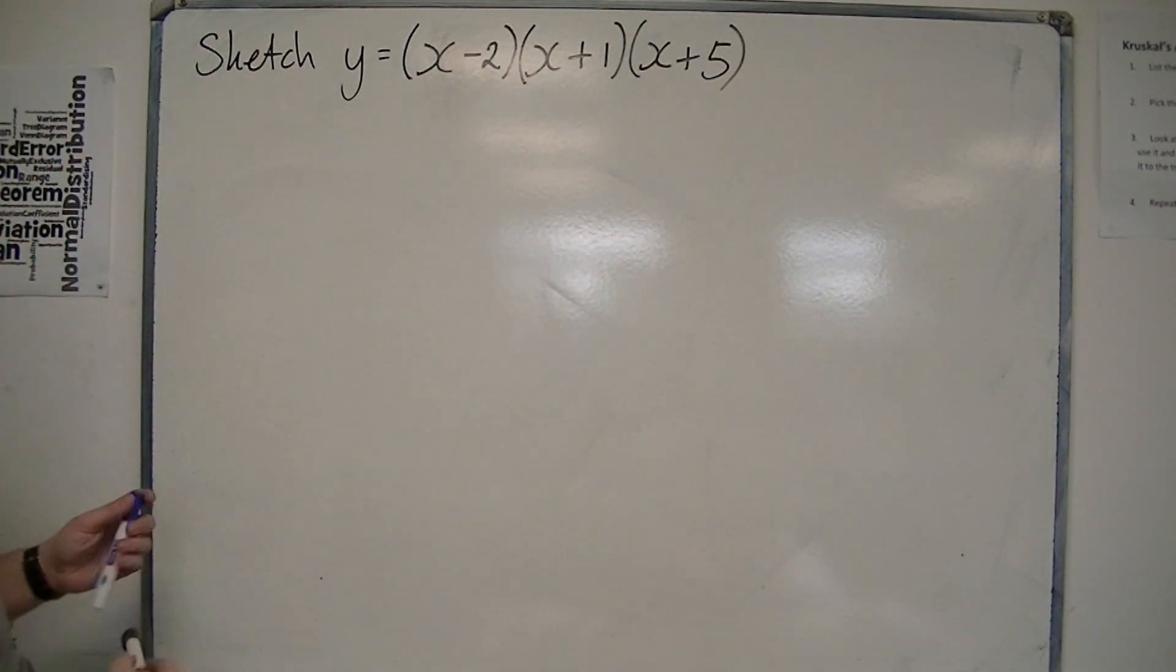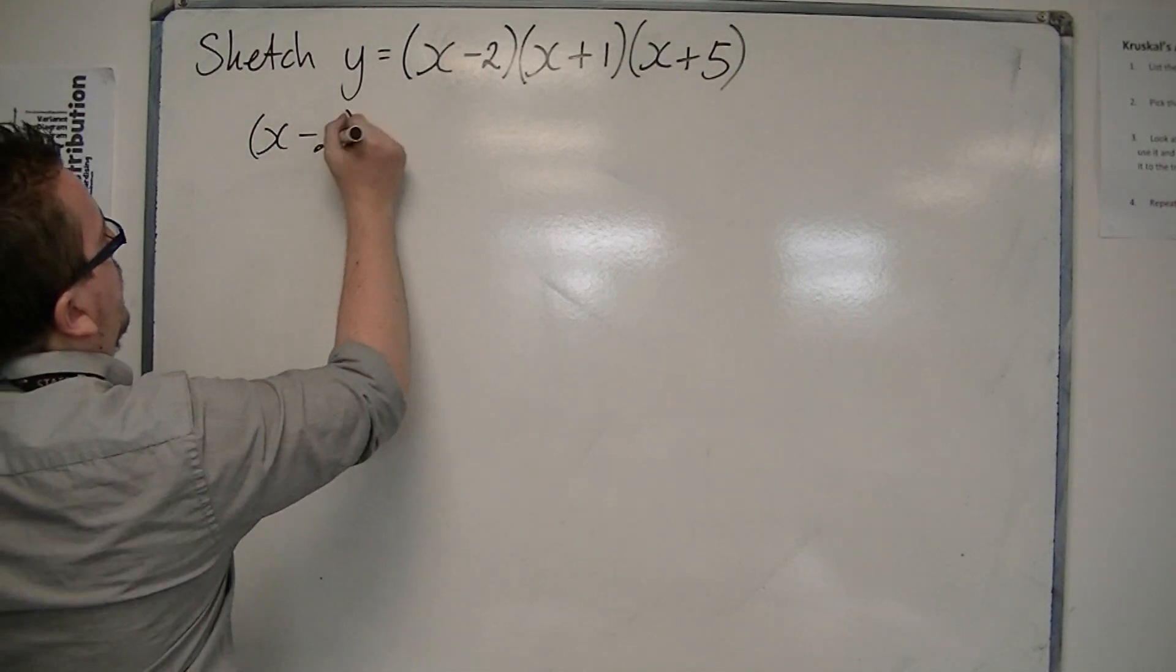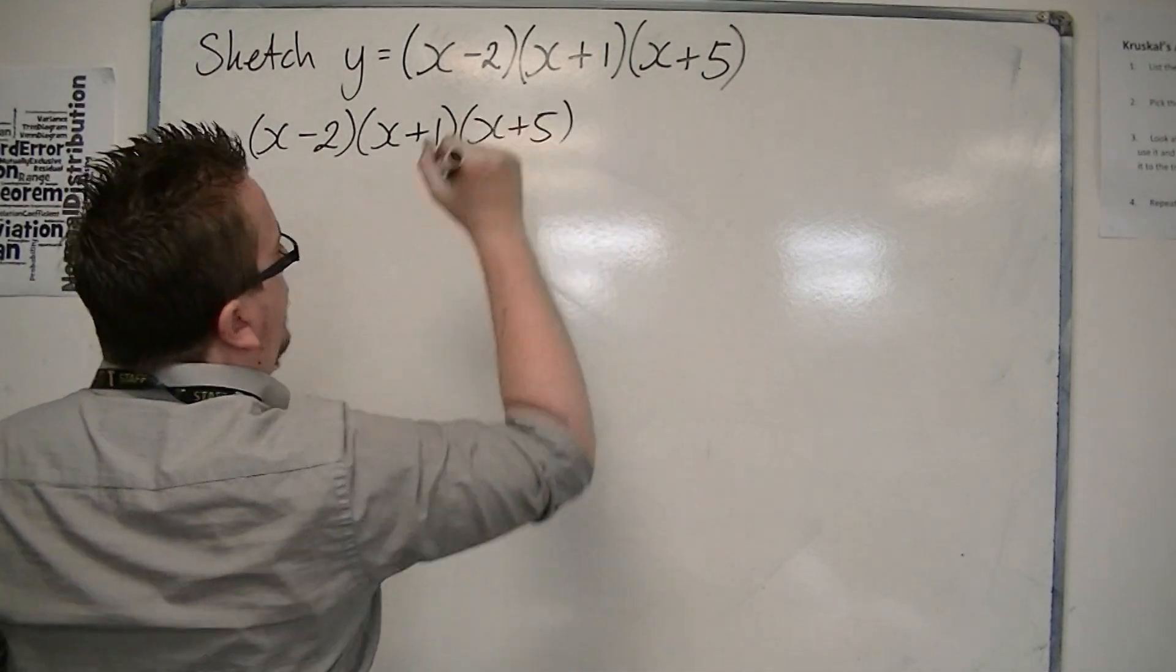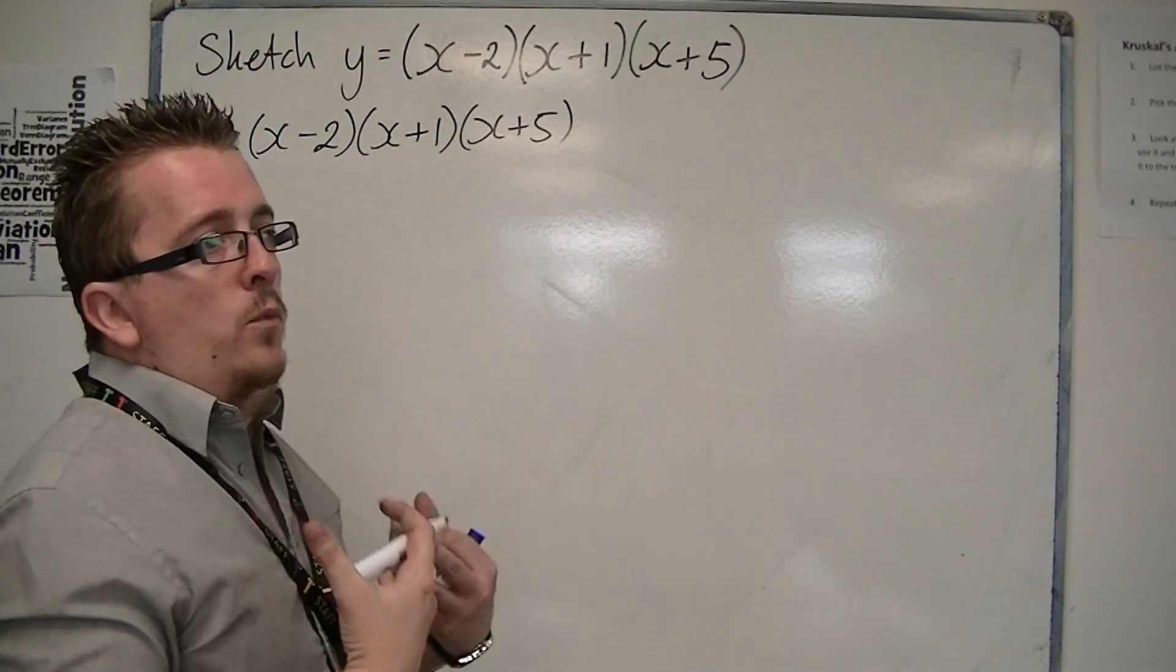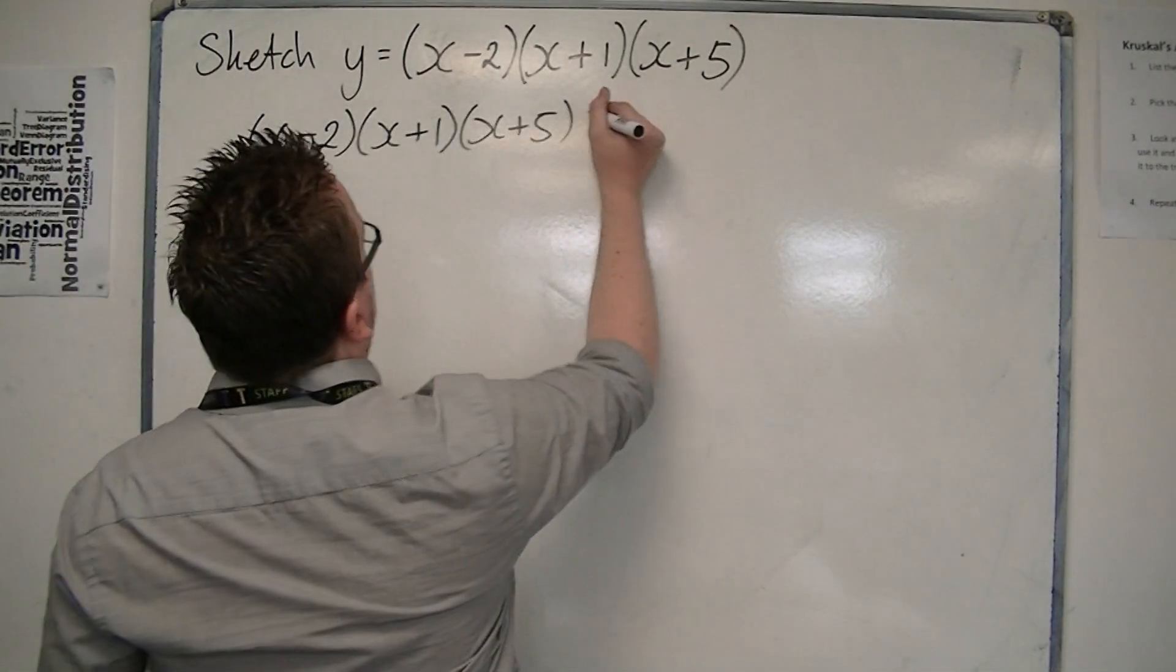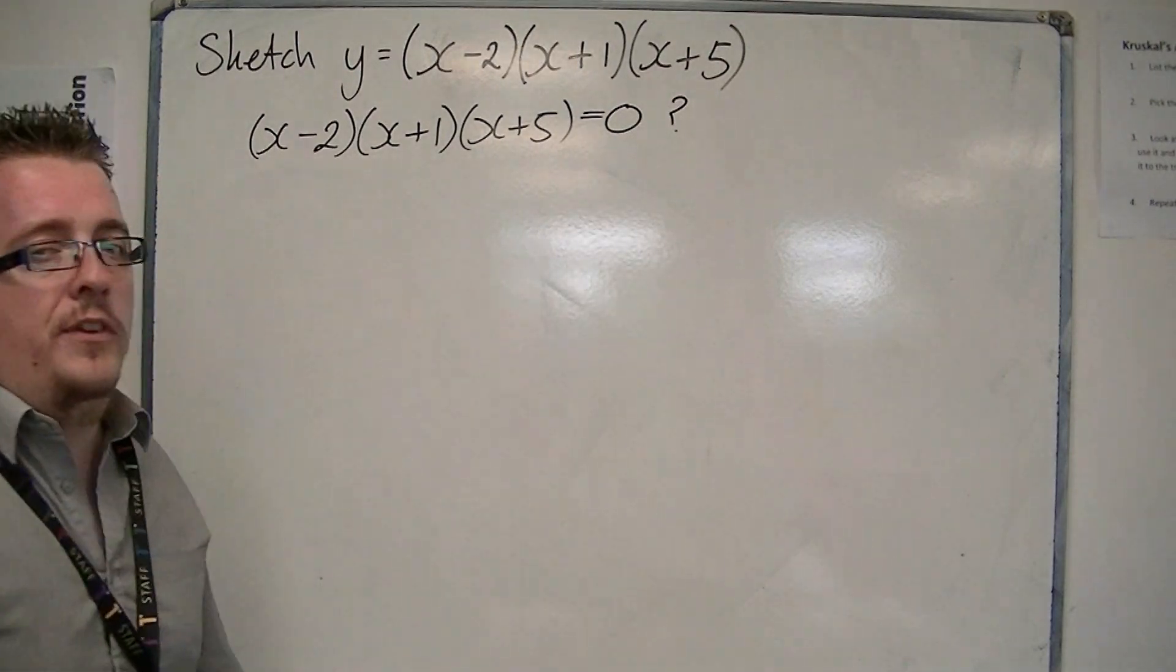And from that, if you then think, what does that mean? When will we get something that crosses the x-axis? So when would this cross the x-axis, it's intersecting with y equals zero. When is this zero? That's what we've got to ask ourselves.